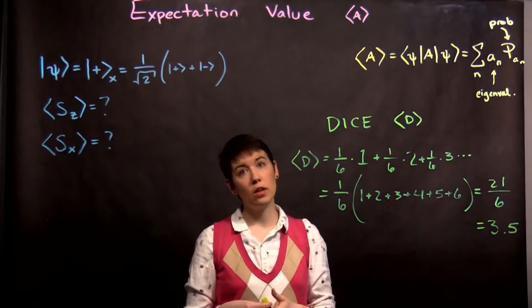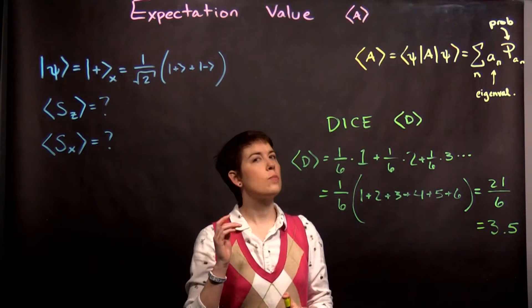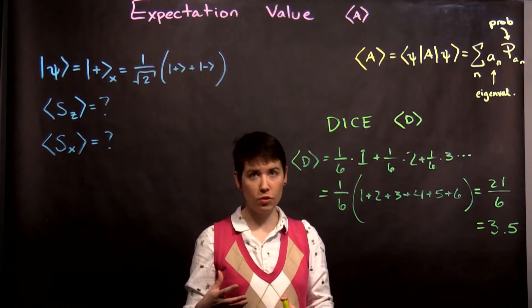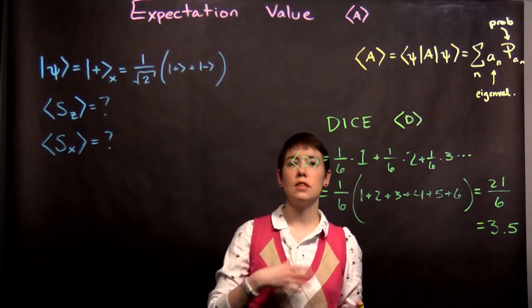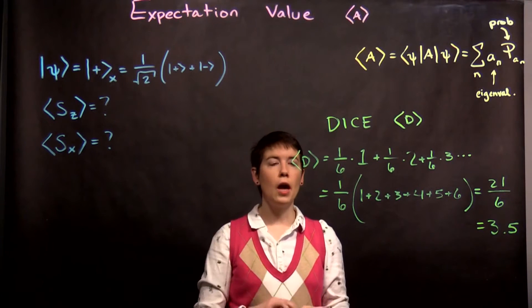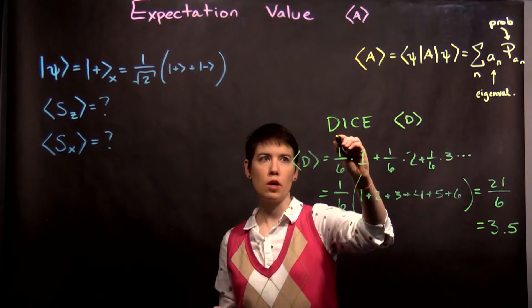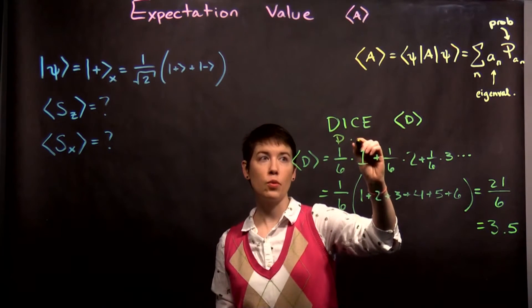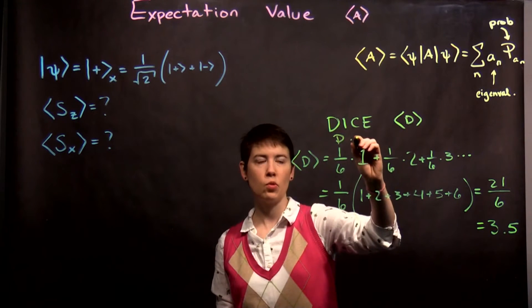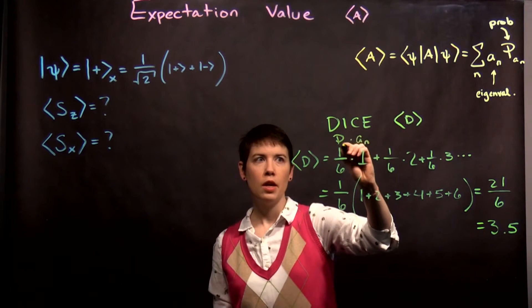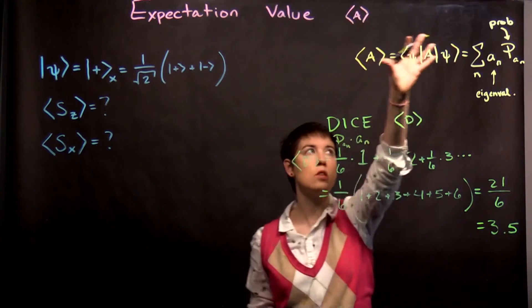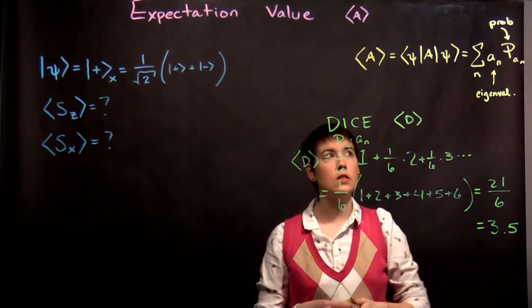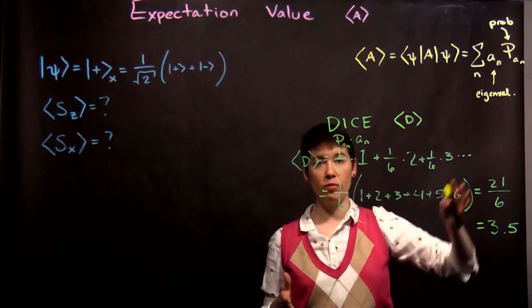It's the same way in a quantum system. Your expectation value, your average value can be different than any of your possible values. And what we did here is we talked about the probability of a specific one times what that value is. And I'm writing it this way so that you can see in the form up here,